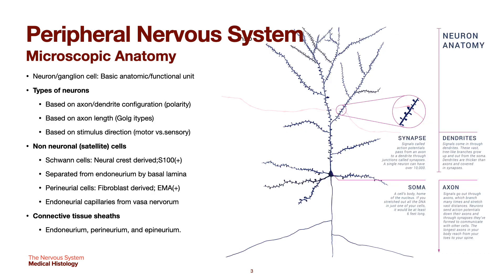For the microscopic anatomy, we have the neuron or the ganglion cell as the basic anatomic and functional unit, which is highly specialized with complex morphology. We have the perikaryon or soma, your Nissl substance, your neurofibrils, your dendrites, and your axons. We have types of neurons and they are basically divided into different categories.